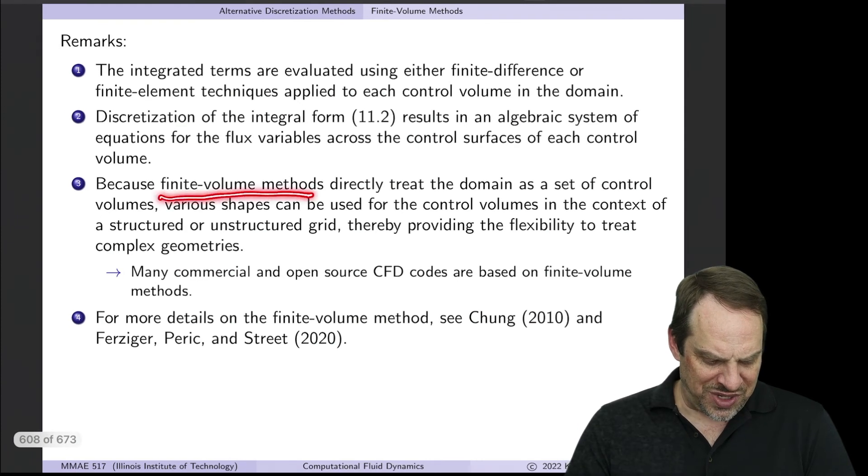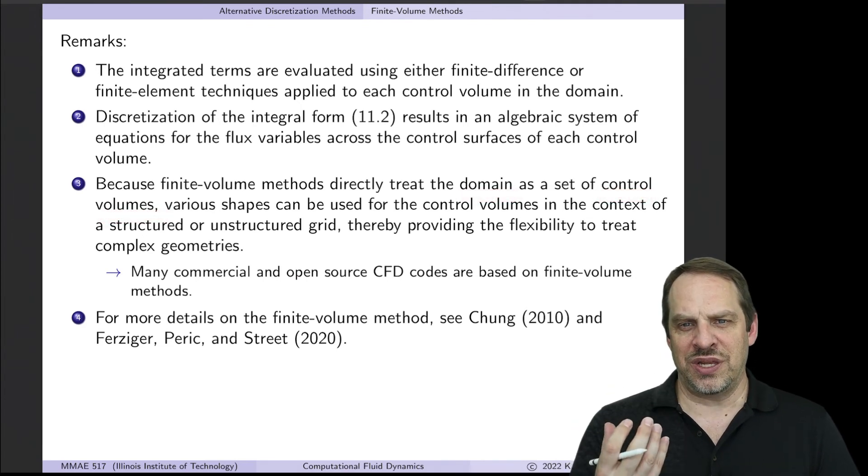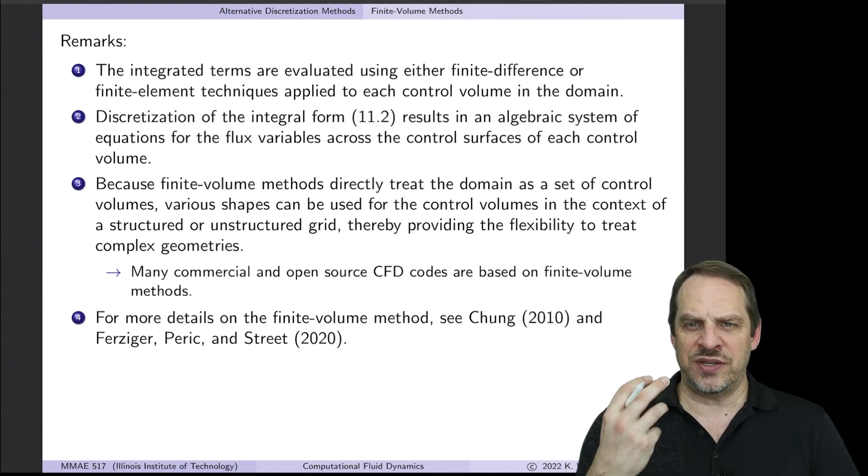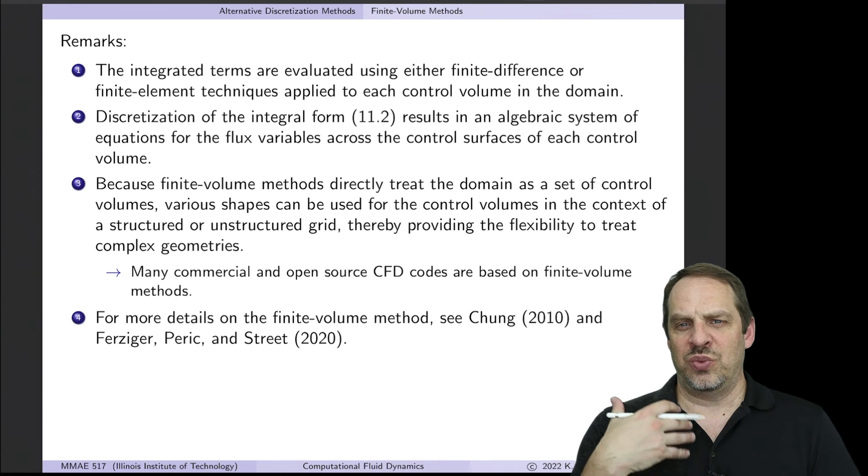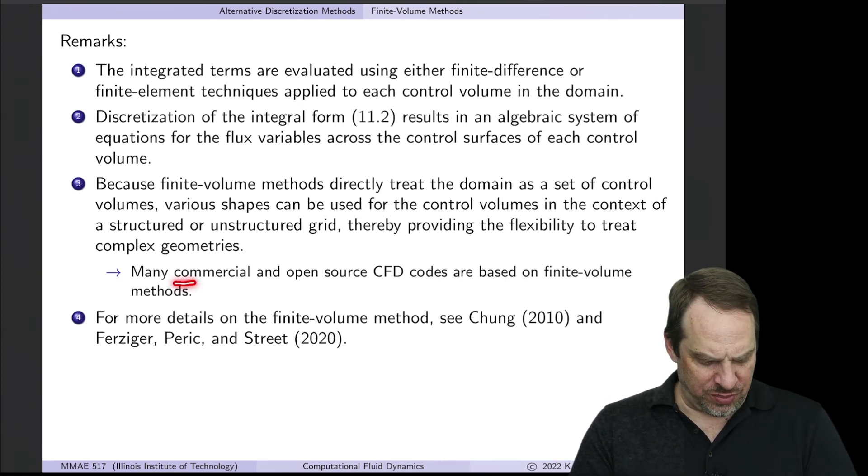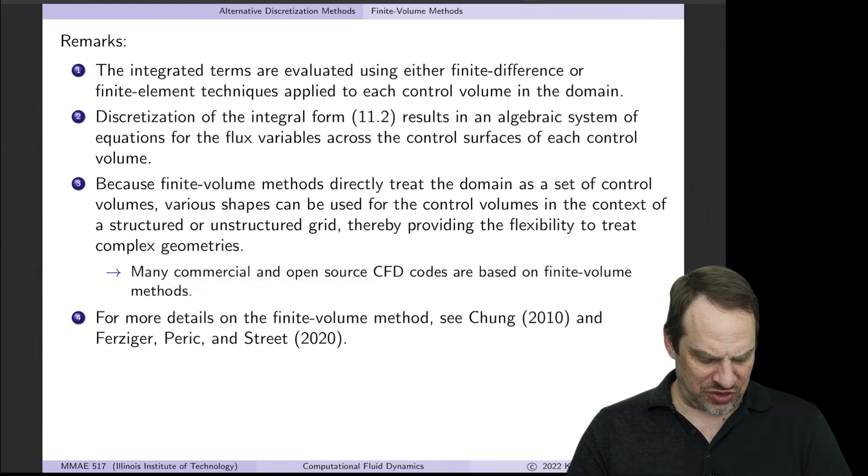Because the finite volume method directly treats the domain as a set of control volumes, this gives us a lot of flexibility in how we define these little finite volumes: different shapes and sizes and orientations. We can easily have unstructured grids, accommodate complex geometries, and this is why they are popular in commercial and open source CFD codes.